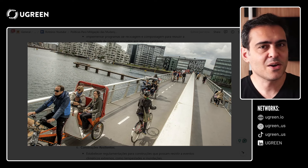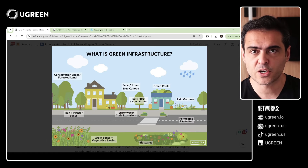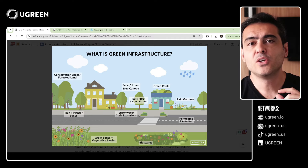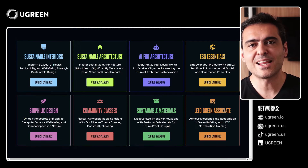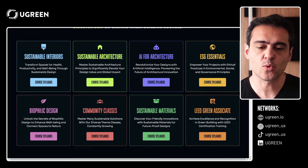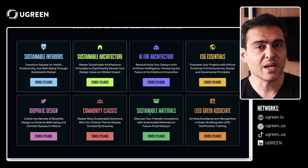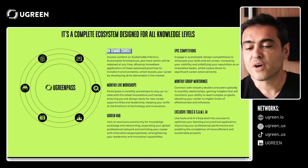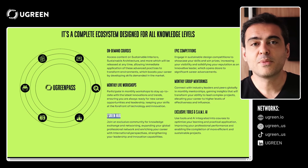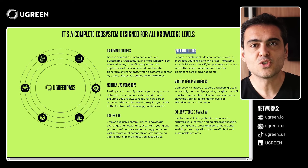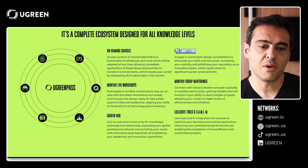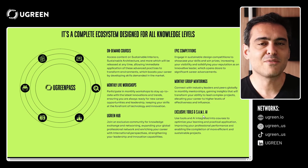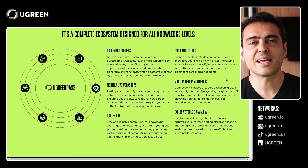I'm going to talk about each of these elements. But if you want to learn more, consider joining UGreenPass — our platform accelerating sustainability leaders through community, education and tools. Here you can find courses with updates and new courses added monthly. We have a complete ecosystem for sustainability professionals, providing on-demand courses, monthly live workshops, the UGreenHub community, epic competitions, monthly group mentorings, and Semi-AI, our personal guide through your sustainability learning journey. The link is in the description.